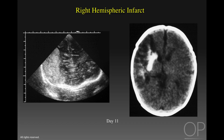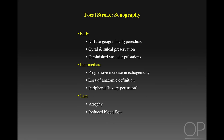The size of the hemorrhage on CT is much smaller than the echogenic lesion on ultrasound. It is therefore very difficult for ultrasound to distinguish between hemorrhage and stroke or ischemia because they have a very similar appearance. Focal stroke early on shows a pattern of diffuse geographic increased echogenicity with preservation of the gyral and sulcal pattern and diminished vascular pulsations on color Doppler. After two to three days and into the next week, there is progressive increase in echogenicity with loss of anatomic definition and the appearance of peripheral luxury perfusion well shown on color Doppler.